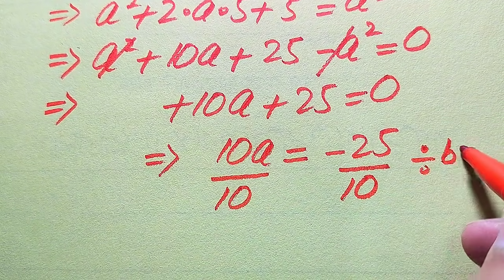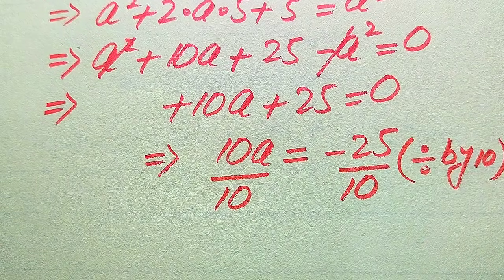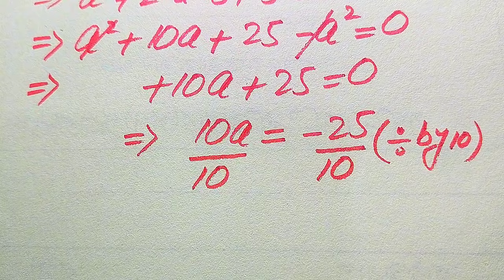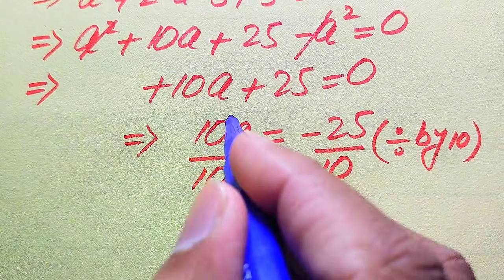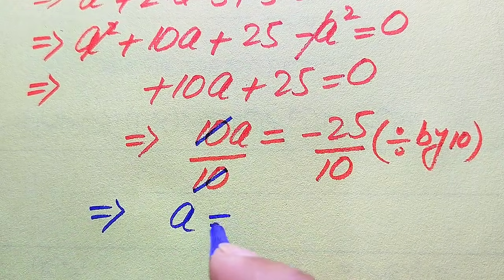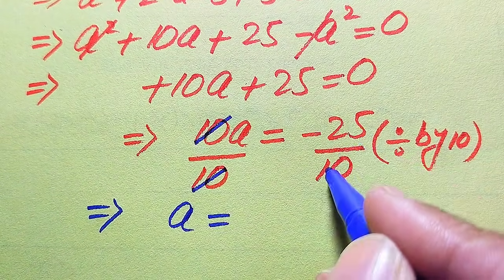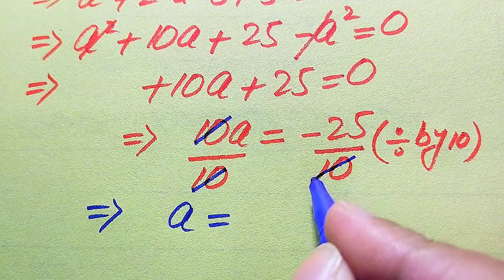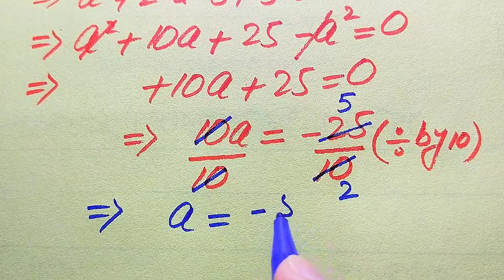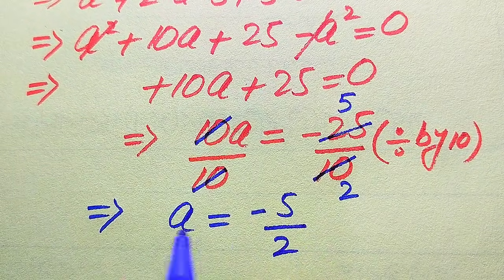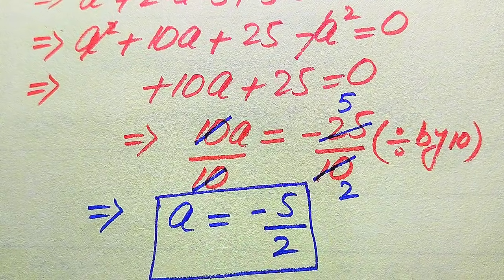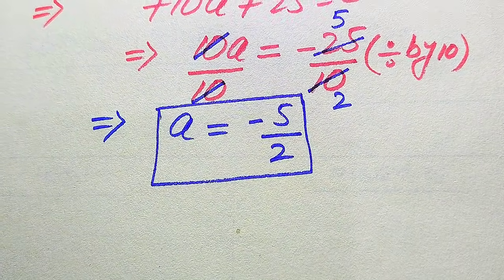To isolate a, we divide both sides by 10. The 10 cancels on the left-hand side, and we simplify the right-hand side by cancelling by a factor of 5: −25/10 = −5/2. So the value of a we get from this method is a = −5/2.